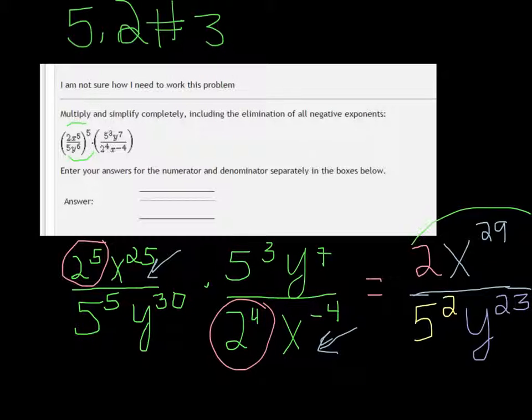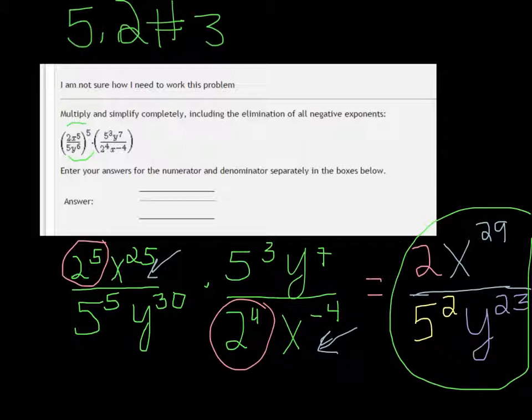So this is going to be your answer. And I believe the way they have it set up for you is that you put the numerator in the first blank and the denominator in the second blank, the bottom one. It's hard to tell with this here, but I believe that's what you do. Thank you.